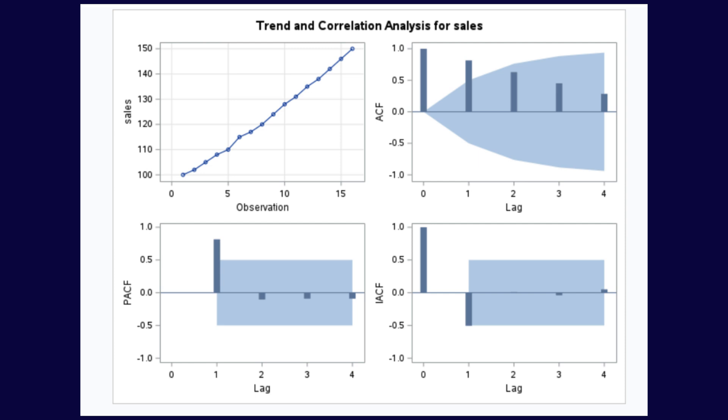The trend and correlation analysis plot for the sales series clearly indicates non-stationarity. The top-left plot shows a strong upward trend over time, confirming a non-constant mean. The ACF (autocorrelation function) displays slow decay, a classic sign of a non-stationary series, as correlations remain high across multiple lags. The partial autocorrelation function shows a significant spike at lag 1, then drops off, which may suggest an autoregressive process if the series is differenced. The inverse autocorrelation function also confirms persistent autocorrelation. Together with the earlier ADF test results, this plot strongly suggests that the sales data need to be differenced to achieve stationarity before any reliable time series modeling.